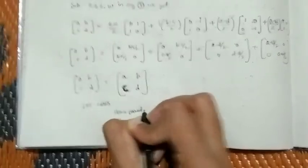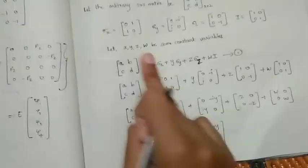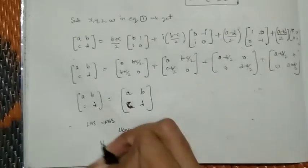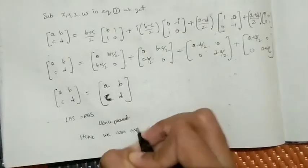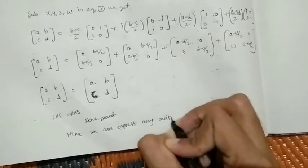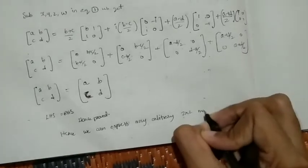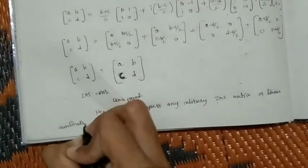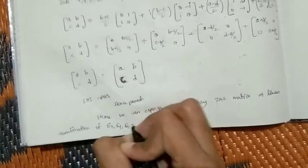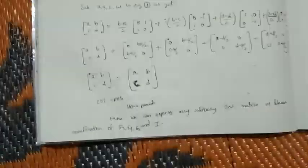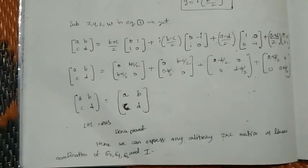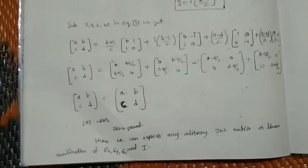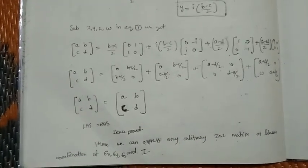Our hypothesis is true, so we can express any 2×2 matrix as a linear combination of Sigma X, Sigma Y, Sigma Z, and I. Hence we can express any arbitrary 2×2 matrix as a linear combination of Sigma X, Sigma Y, Sigma Z, and I. That is the solution, demonstrating this important property of Pauli spin matrices.